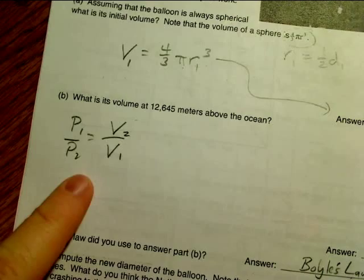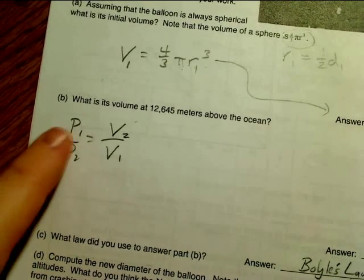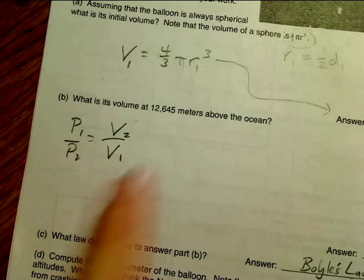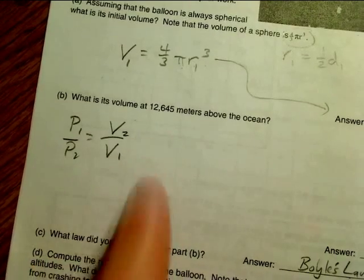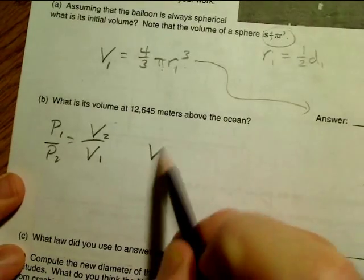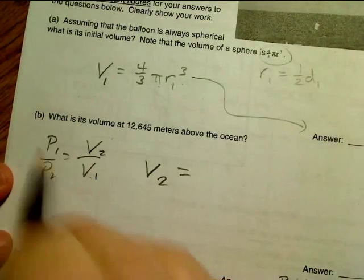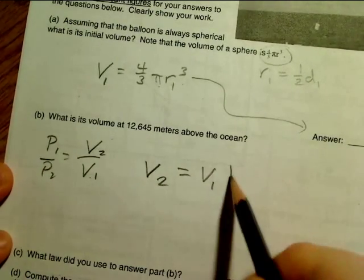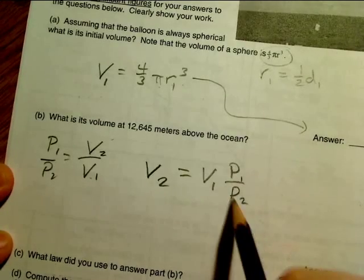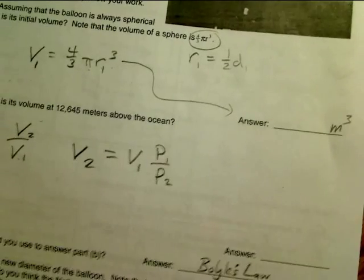Here is the equation for Boyle's law. Pressure, the initial pressure over the final pressure is equal to the final volume over the initial volume. We're looking for the volume at the second height, at the higher altitude, so you multiply both sides by V and you get this. Make sure that, well, I guess it's given in Pascals, okay, we don't have to worry about that right there.